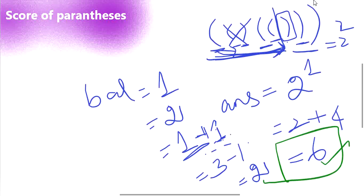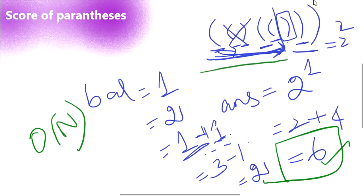This actually works in linear time since we iterate over the entire string only once, and it works in constant space as we don't need any extra space — we just use the answer variable to calculate our output. Let's see how we are going to code it.